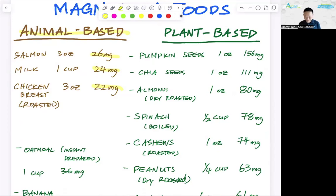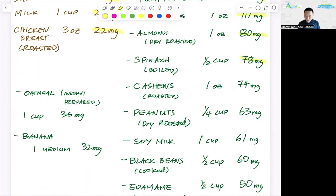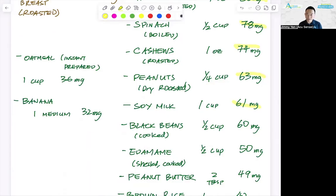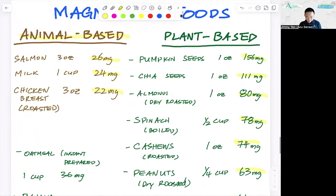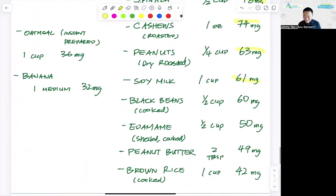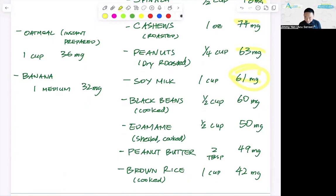So let's look at the vegetables, the plant-based. Pumpkin seeds is the winner. Pumpkin seeds has the highest tryptophan and magnesium at 156 milligrams in one ounce. Chia seeds, one ounce, 111 milligrams. Almonds dry roasted have 80 milligrams, one ounce. Spinach boiled half a cup is 78 milligrams. Cashews roasted, one ounce, 74 milligrams. Peanuts dry roasted a quarter of a cup, 63 milligrams of magnesium. Soy milk, one cup, 61 milligrams. So throw away the cow milk, heat up some soy milk. That's even better because cow's milk is only 24 milligrams of magnesium, soy milk 61, almost three times more. Cooked black beans, 60 milligrams of magnesium.